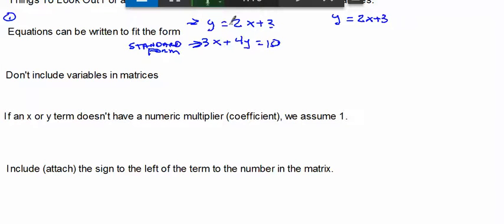In standard form, the x term comes first, then the y term, then you have an equals, and then you have a number, or what we call a constant. So in order to change this so it fits this form, I'm simply going to subtract 2x from both sides of the equation. And doing that, now I get negative 2x plus y equals 3.